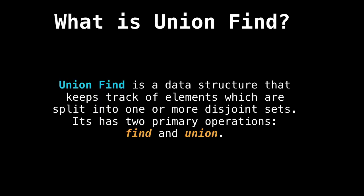Let's dive into some discussion examples concerning the union find. So what is a union find? The union find is a data structure that tracks elements which are split into one or more disjoint sets. The union find has two primary operations: find and union. What find does is, given an element, the union find will tell you what group that element belongs to. And union merges two groups together.